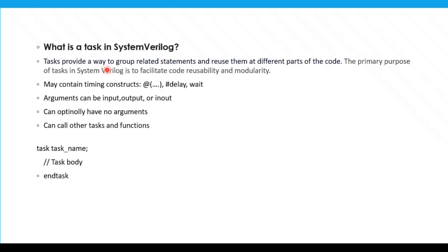A task provides a way to group related statements and reuse them at different parts of the code. For example, consider you want to do some parity calculation. If you are doing that parity calculation in so many places inside the code, instead of writing it manually for each statement, you can group all the parity calculation statements inside the task and reuse them at different parts of the code by calling the task name.